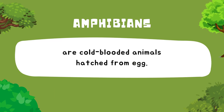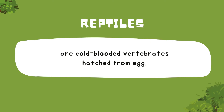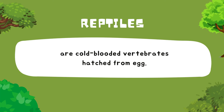Now, let us talk about amphibians. They are cold-blooded animals hatched from egg. They spend part of their lives in water and part on land. They have moist and smooth skin. Toad, caecilian, newt, and salamander are amphibians.